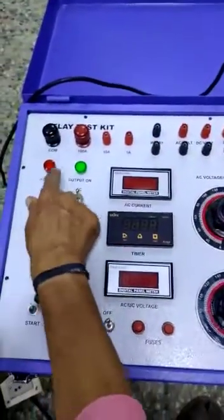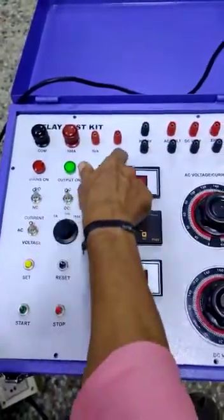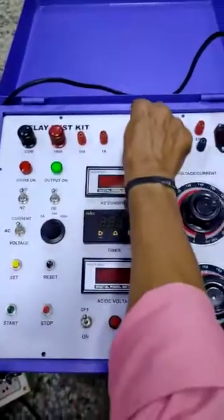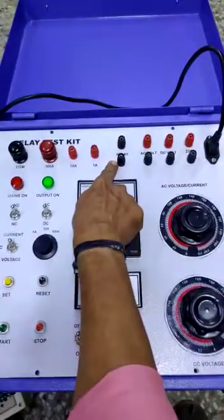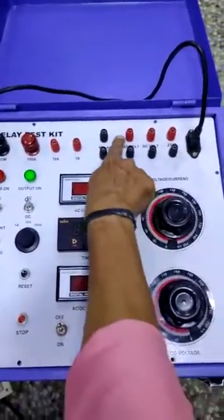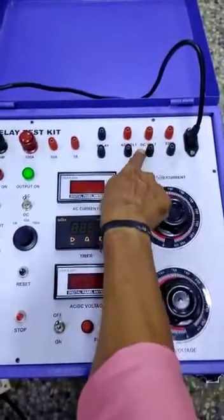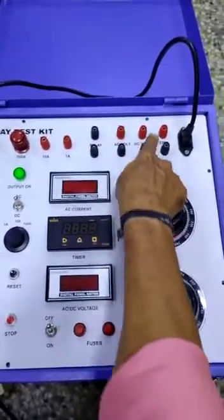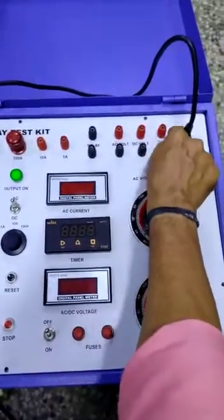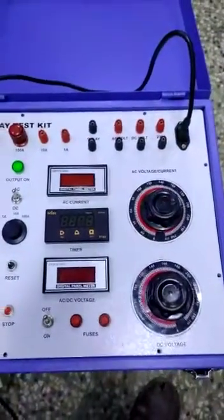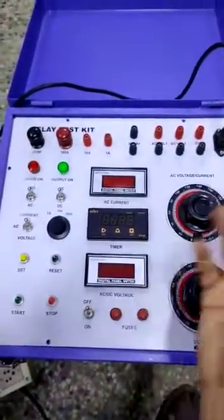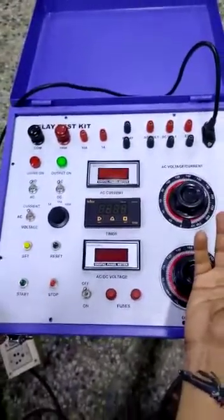This is mains on lamp, output on lamp. These are the current terminals. This is the relay contact, NO contact or NC contact has to be connected here. AC variable voltage will be available here. DC variable voltage will be available here. AC 230 volt fixed voltage available to supply any external meter what they want to use.